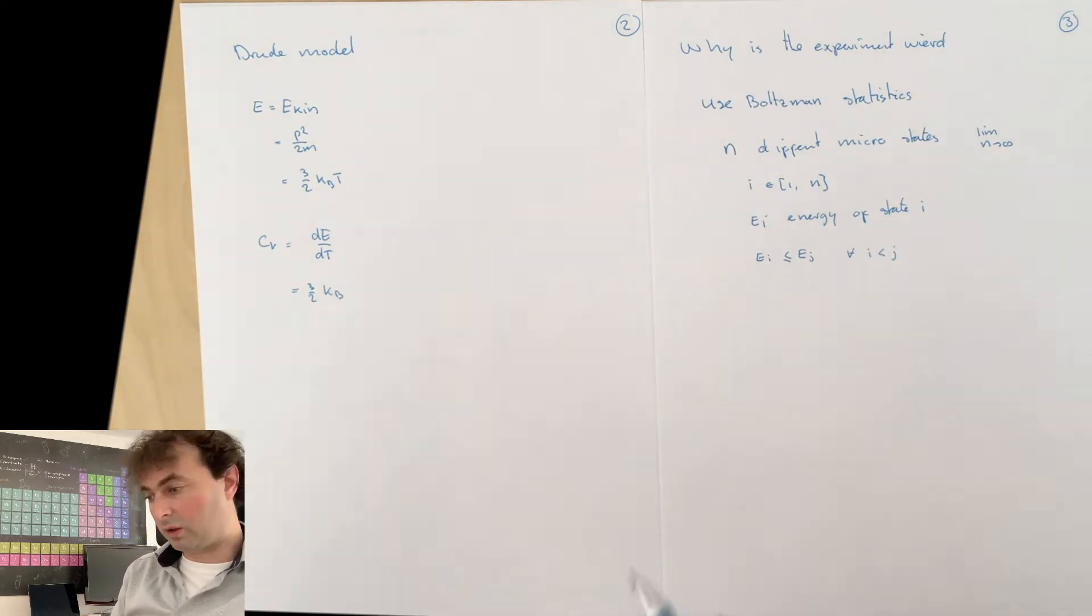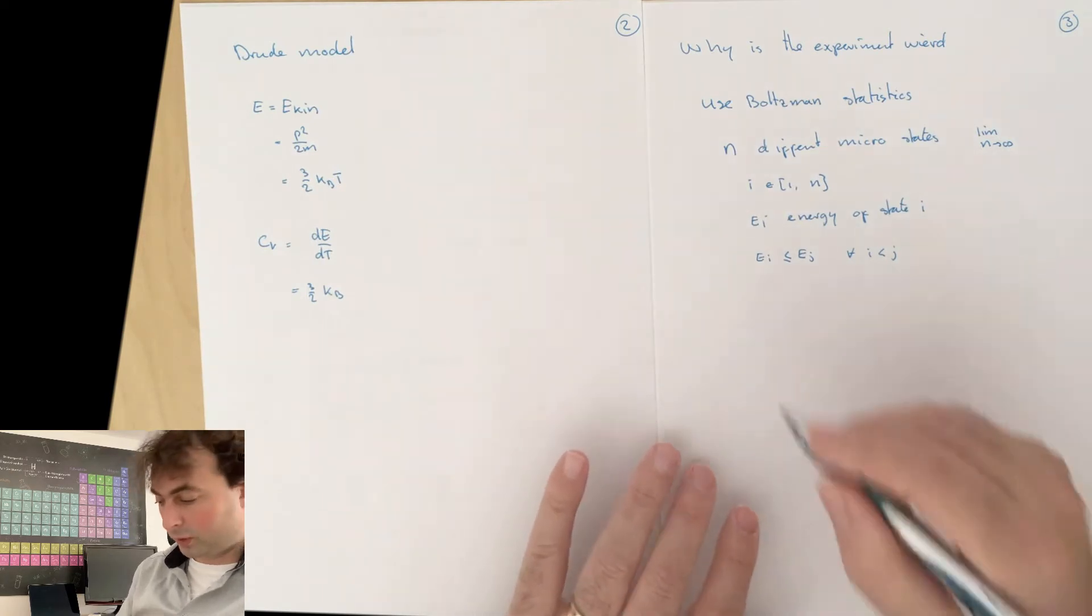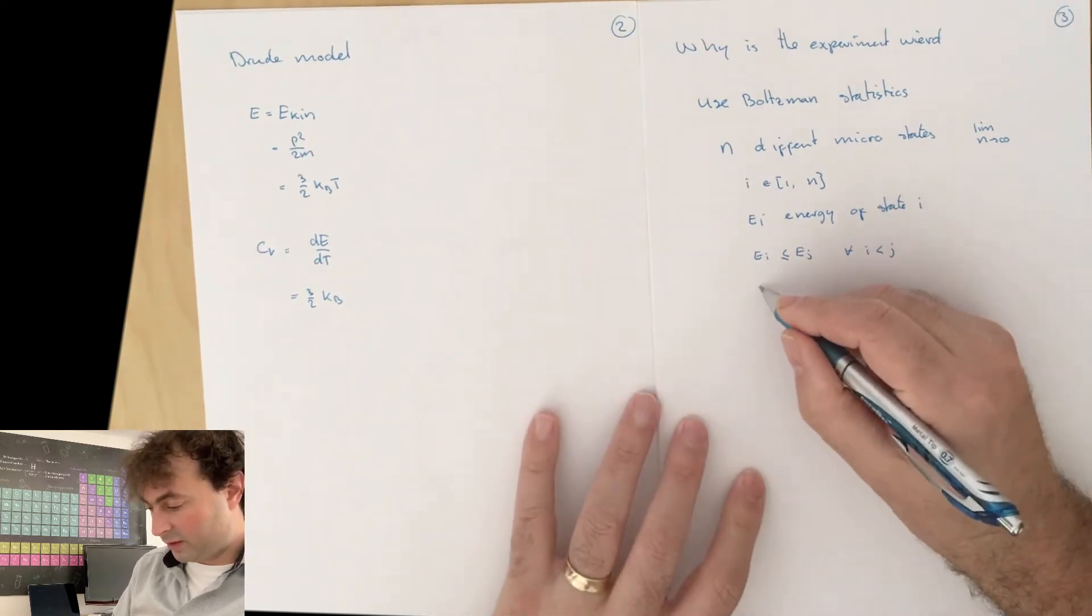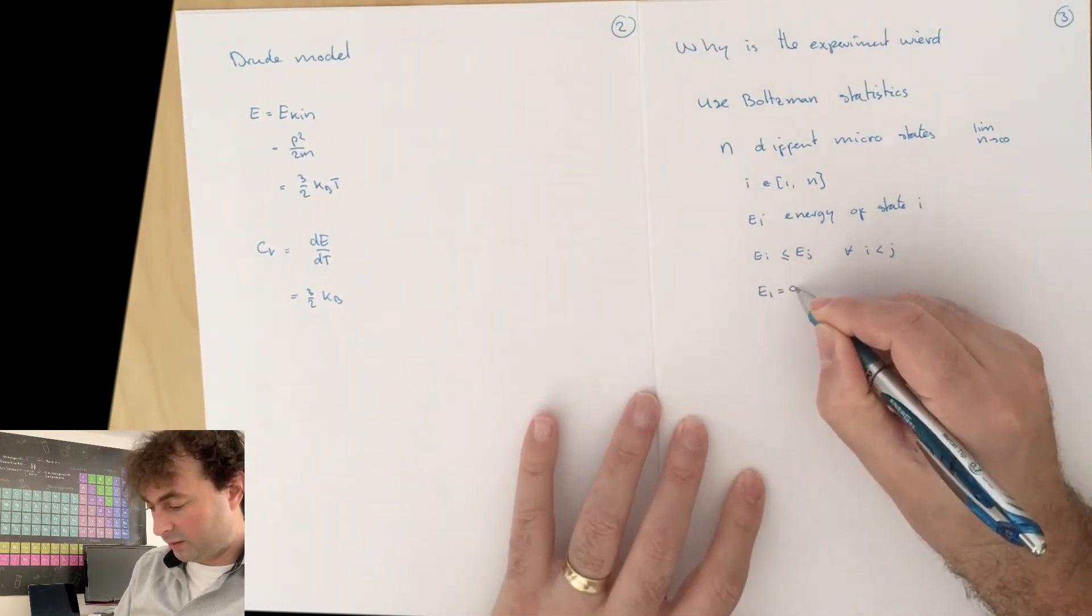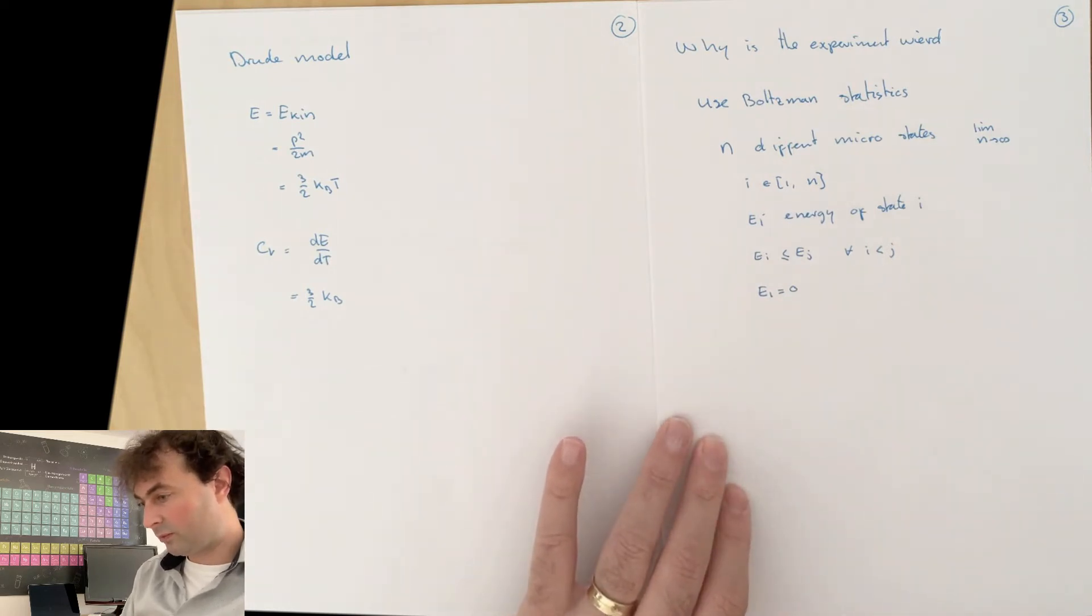I'm going to take my states ordered: EI is smaller or equal than EJ for all I smaller than J. Furthermore, the zero of energy is not important, so I can always say that E1 is zero.